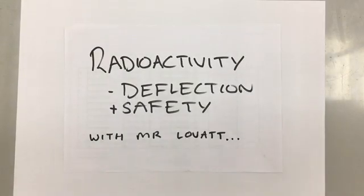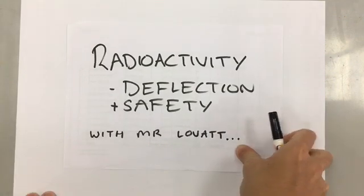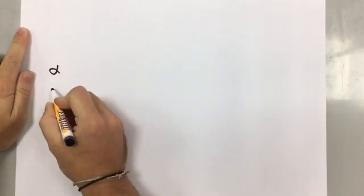This is the third and final video on radioactivity for GCSE. We know from the previous two videos that there are three types of particles: alpha, beta, and gamma.